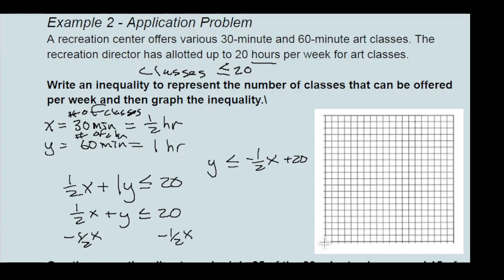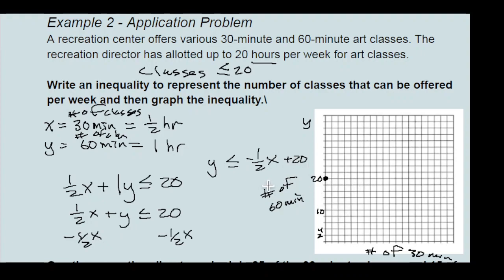Let's set up the graph going up by twos. The y-axis represents the number of 60-minute classes and the x-axis represents the number of 30-minute classes. We count up 2, 4, 6, 8, 10, 12, 14, 16, 18, 20 — so the y-intercept is at 20. The slope is negative one-half, which means down 1 and over 2.